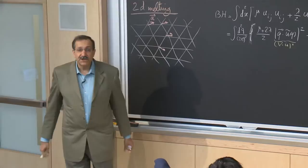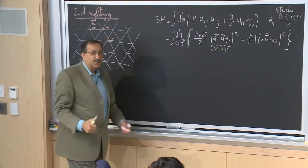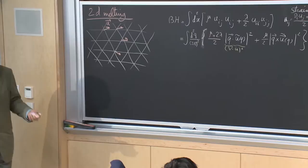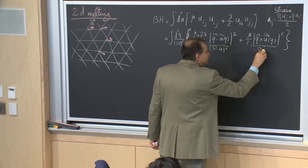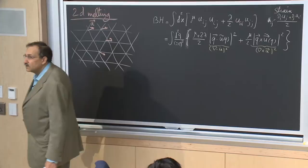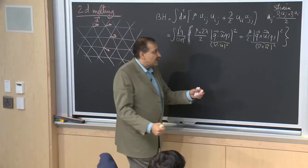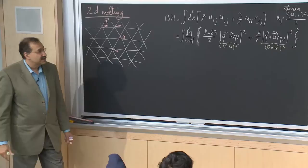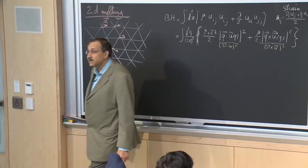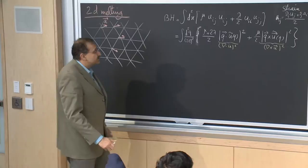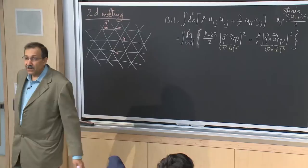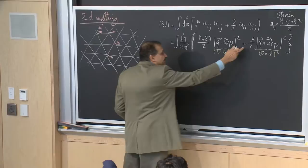In real space, the divergence of u corresponds to squeezing or expanding the deformation, so this measures the cost of changing the density — that combination is related to the bulk modulus. You have that even for a liquid. The curl of u corresponds to making local rotations, so if you try to rotate this material locally, the corresponding shear cost is indicated by mu, the shear modulus. What really makes a solid is this term, because a liquid also has the bulk modulus but lacks resistance to shear.